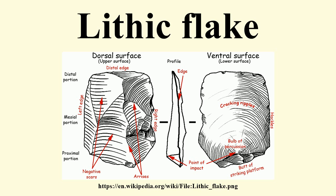Abrupt terminations are often indicative of internal flaws in a core or previously formed hertzian cones on the surface. Eraillure scars, also referred to as bulbar scars, are tiny flake scars that appear on some bulbs of applied force. The reason they form is not entirely understood. Of those flakes that do exhibit eraillure scars, very few have more than one.